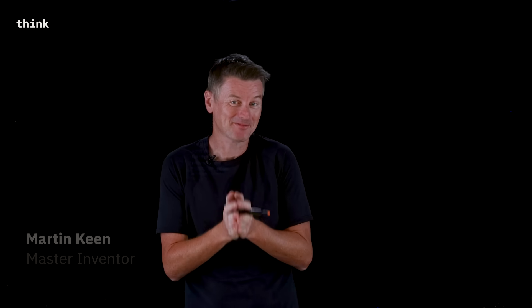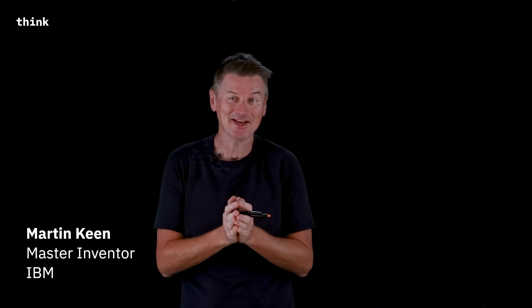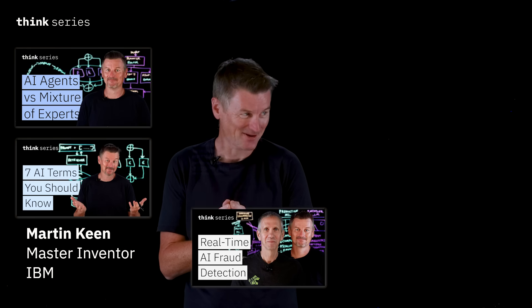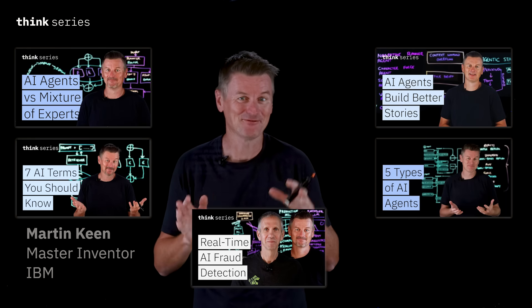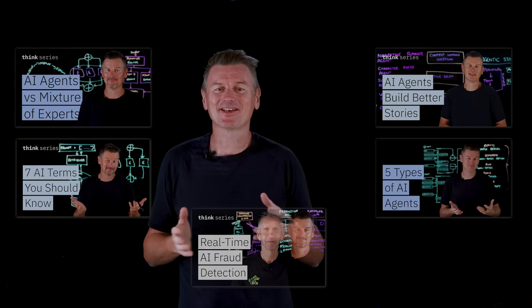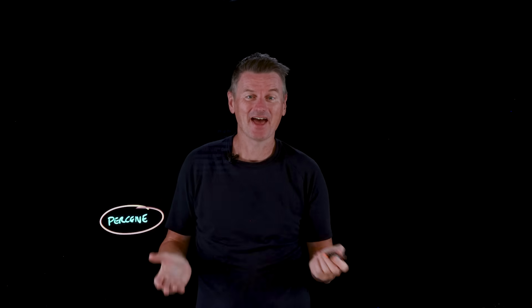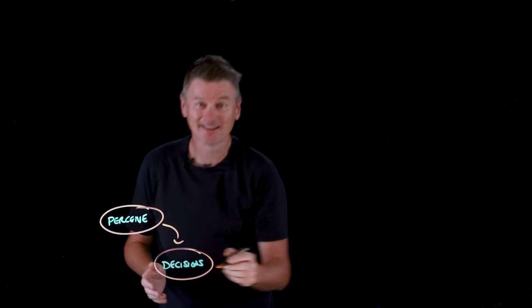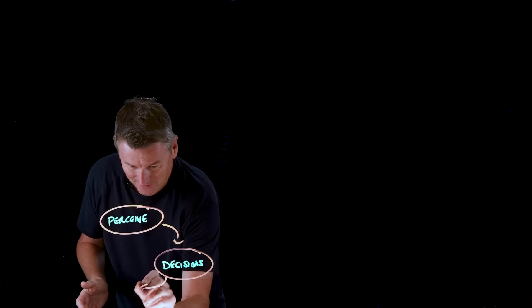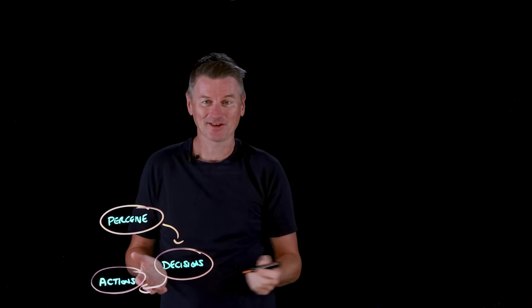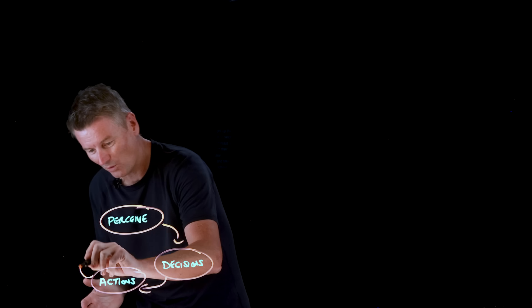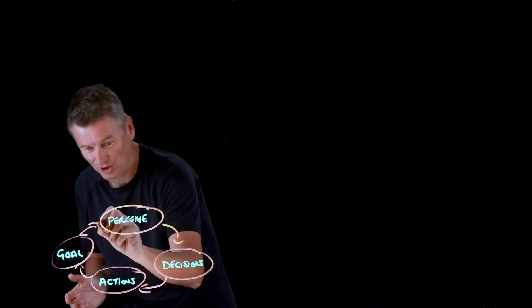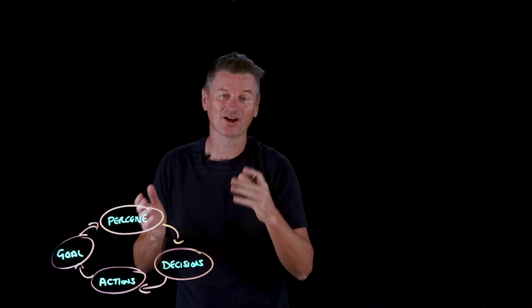AI agents are autonomous systems. They perceive their environment, they make decisions, and based on those decisions they can take actions — all in service of achieving a goal.